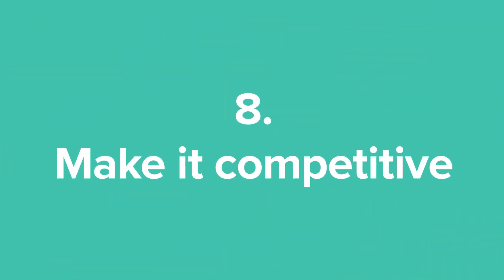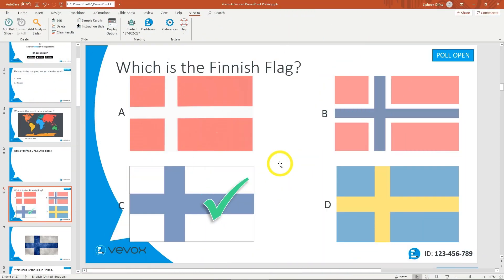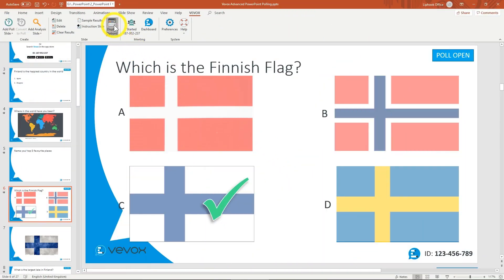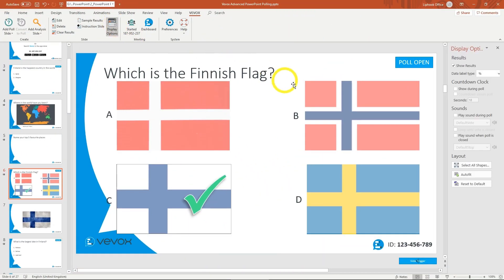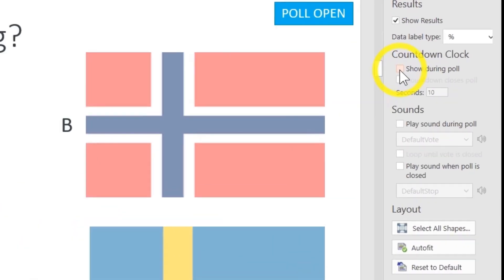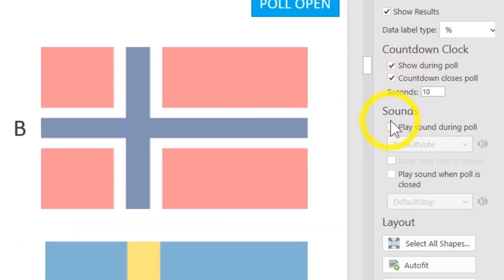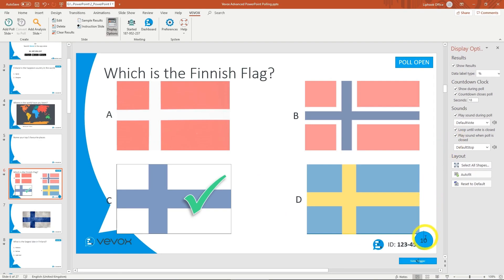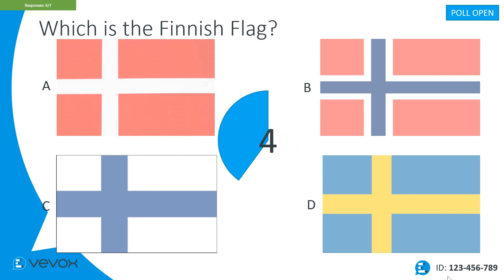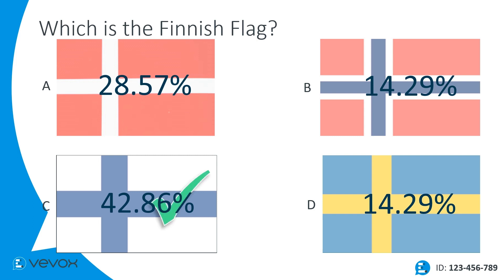Tip 8: Make it competitive. There are occasions where you might want to apply a little pressure to your audience. Adding a countdown timer and even some supporting audio can provide a competitive quiz feel that really engages audiences and encourages them to connect with the subject matter. Adding a correct answer animation also adds to the overall effect.